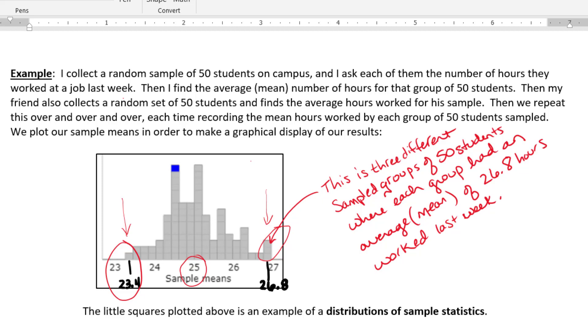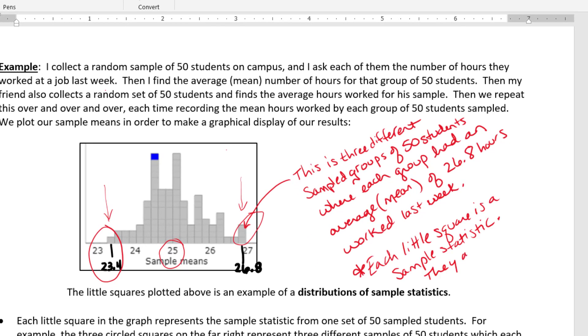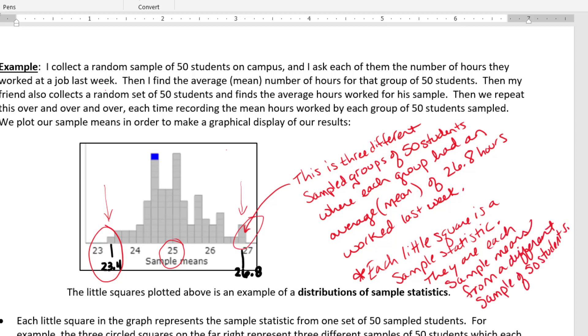It's important to note that each of these little squares is an X-bar. They are sample statistics. They are each sample means from a different set of 50 sampled students. Each square is an X-bar.